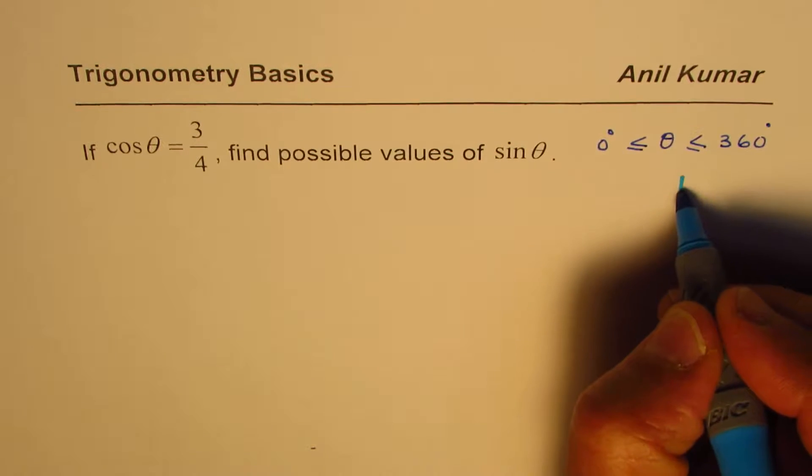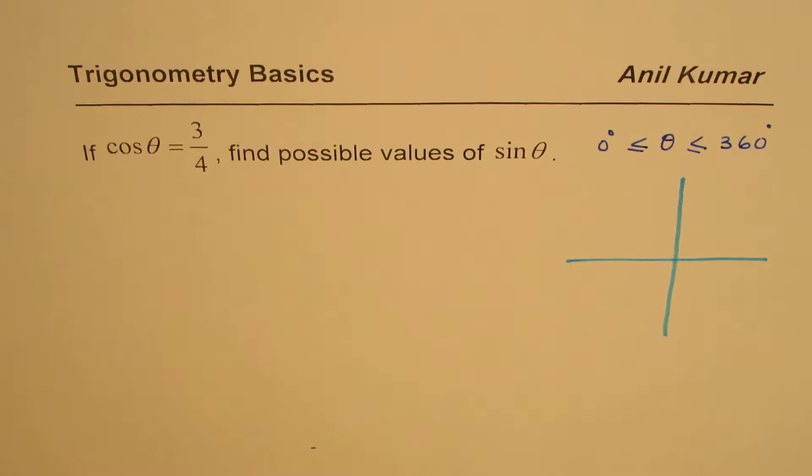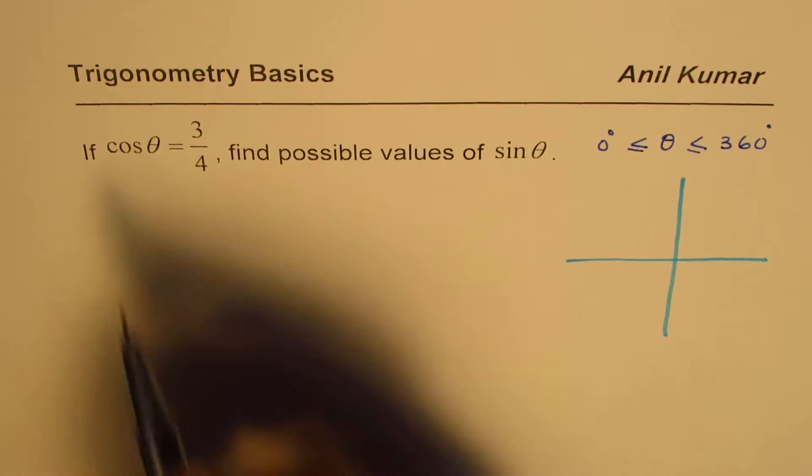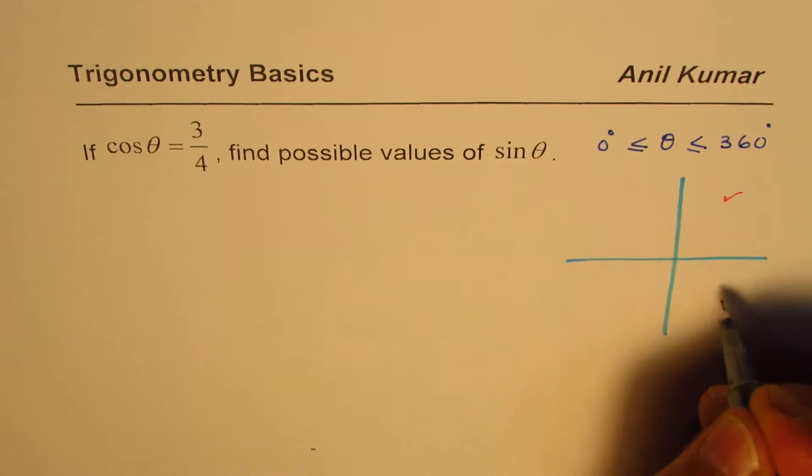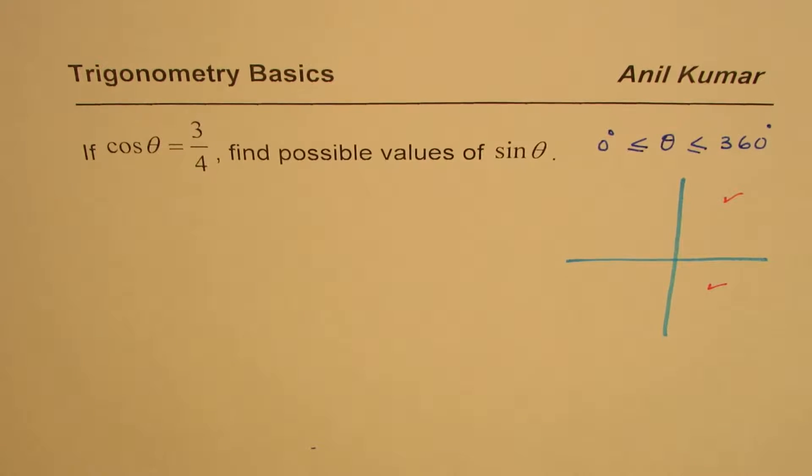Now let's look into the coordinate plane. What we know about cos theta being positive means we are looking into quadrant 1 where all are positive, and quadrant 4. So we could get theta in two quadrants, quadrant 1 or in quadrant 4.